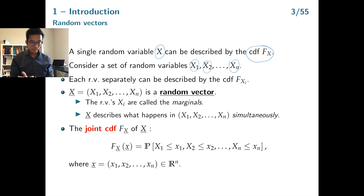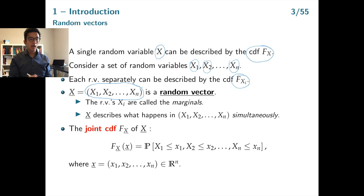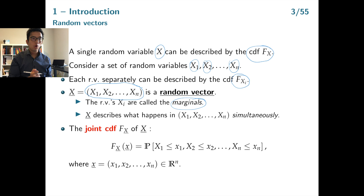For each risk separately we can use a CDF to describe the different probabilities. But our problem now has to be modeled using a random vector. Each xi in this random vector is called a marginal, and studying the marginals will tell you what happens with the different risks separately. But what we are interested in is what happens with the risks simultaneously.